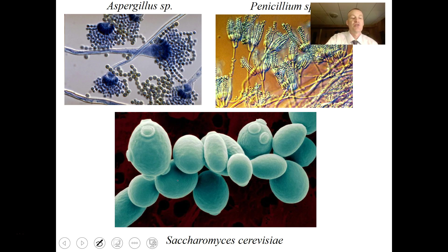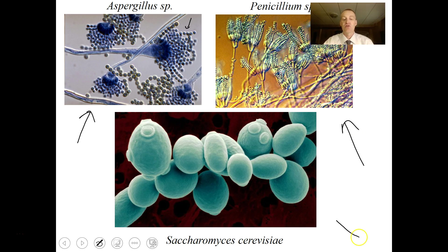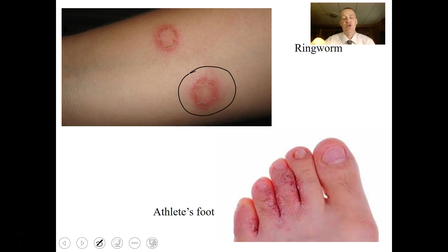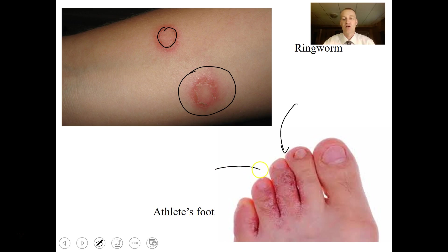Aspergillus is beautiful when stained on a microscopic slide — you can see the little spores being released from it. Penicillium and Saccharomyces or baker's yeast are also interesting-looking organisms. Ringworm is a fungal infection, not actually a worm, though the raised circular area looks like one. Athlete's foot is another — if you go to water parks or public showers like at the gym, you might want to bring shower shoes to avoid picking up this organism.